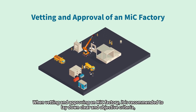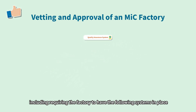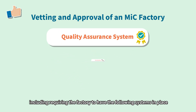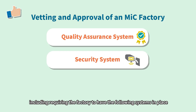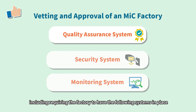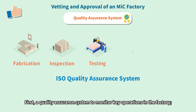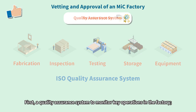When vetting and approving an MIC factory, it is recommended to lay down clear and objective criteria, including requiring the factory to have the following systems in place. First, a quality assurance system to monitor key operations in the factory.